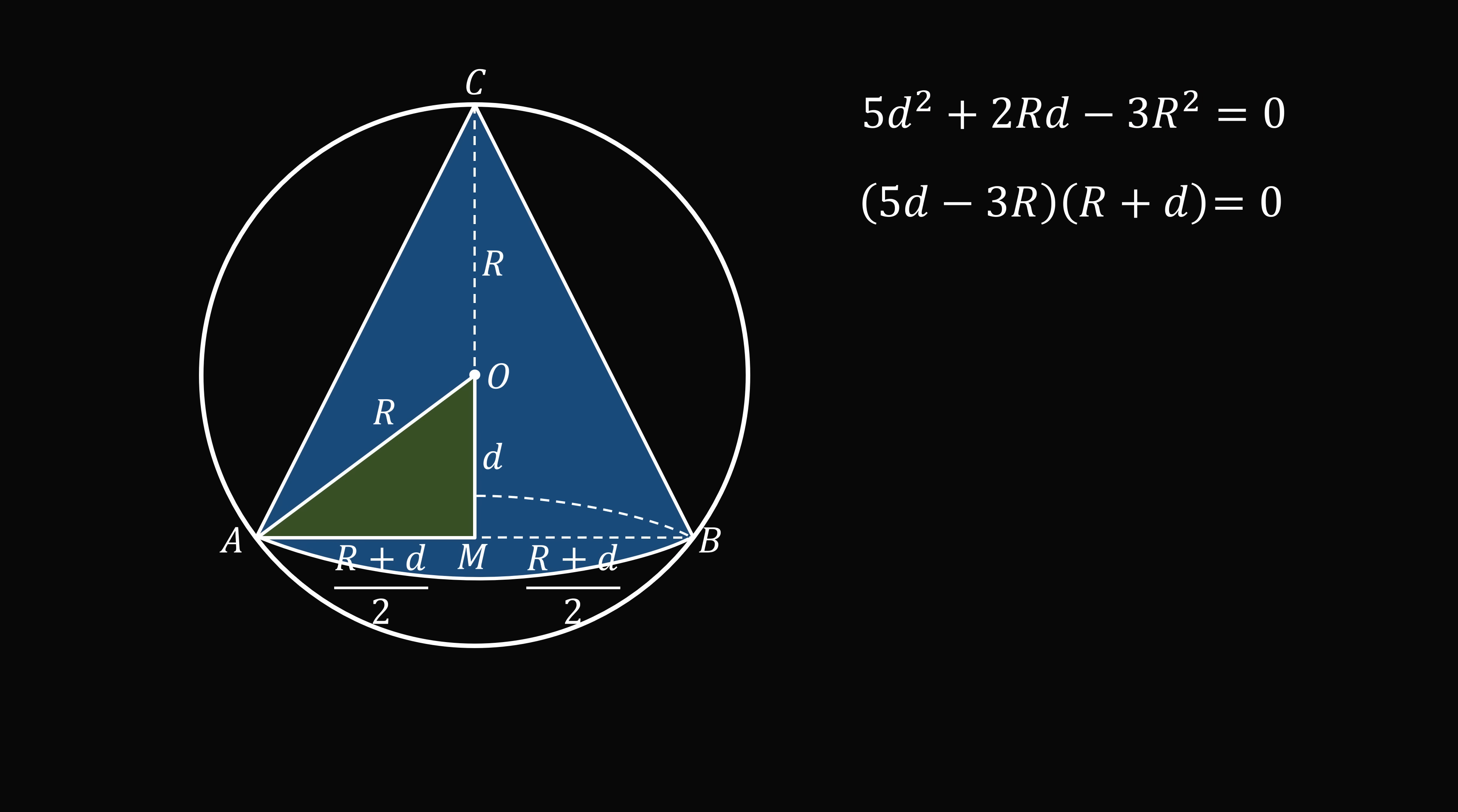So now we have two possible solutions. We have d is equal to 3R over 5 or d is equal to negative R. But we want d to be some positive value, so we will eliminate that d is equal to negative R. So d is equal to 3R over 5.